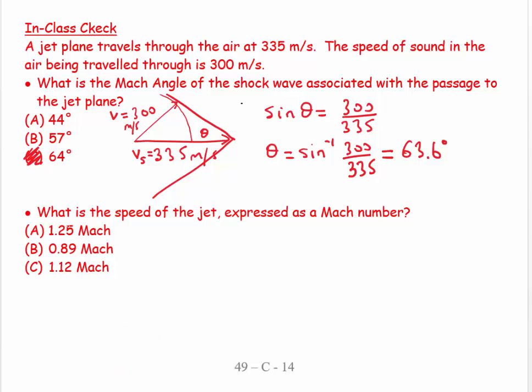And then for the second part I say what is the speed of the jet expressed in Mach number. So Mach number is equal to the velocity of the source over the velocity of sound in air. So that would be 335 over 300 which equals 1.12 Mach.